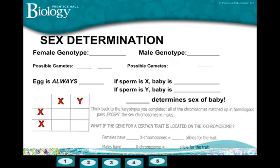We're going to talk about sex determination and how that plays into the inheritance of certain characteristics or traits. When we look at the genotype of females, her genotype is sex chromosomes X and X. The possible gametes she can make are going to include eggs that have an X. Remember, that process is called meiosis.